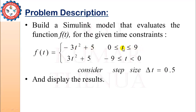When t is greater than or equal to 0 and less than or equal to 9, the function value is minus 3t squared plus 5. When t is less than 0 and greater than minus 9, the function is 3t squared plus 5. The step size delta t is equal to 0.5. I have implemented the same problem in MATLAB also, so you can get an idea of how we implement it.